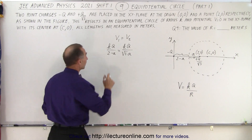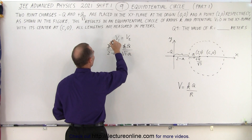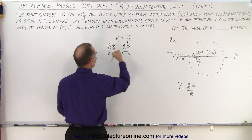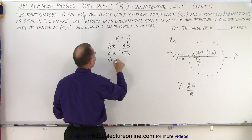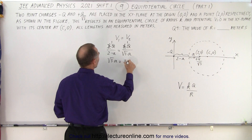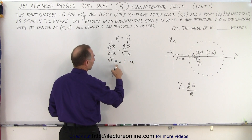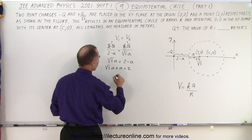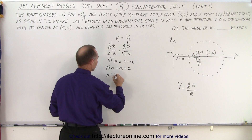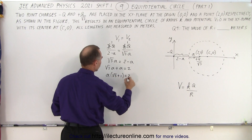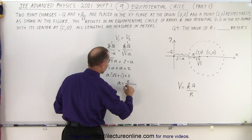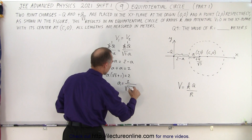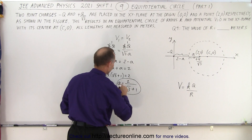Notice that K and Q cancel on both sides. Cross-multiplying gives us the square root of 3 times A equals 2 minus A. Moving A across: the square root of 3 times A plus A equals 2, or A times (square root of 3 plus 1) equals 2, so A equals 2 divided by (square root of 3 plus 1). Now we have the value for A.